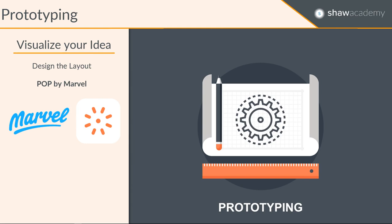What you do is upload your drawn screens to your phone. You can access them through POP by Marvel and then set them up as screens. You can put hotspots to bring you to a new screen — a new image that you've uploaded to your device — and so on. It's really very good to simulate your app idea.